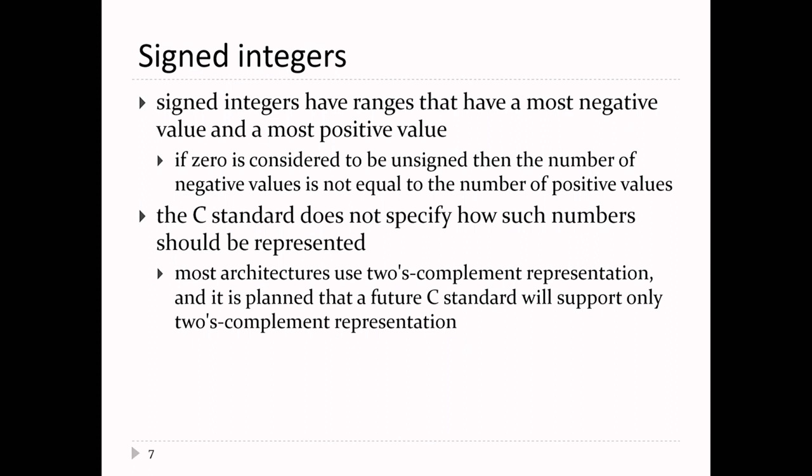So the most negative value — its magnitude is always bigger than the most positive value. You could choose a different representation where you go from minus 1 up to 2, in which case the magnitude of the most positive value becomes bigger than the magnitude of the most negative value.